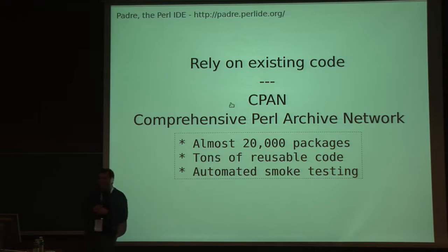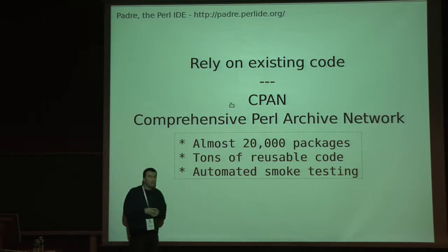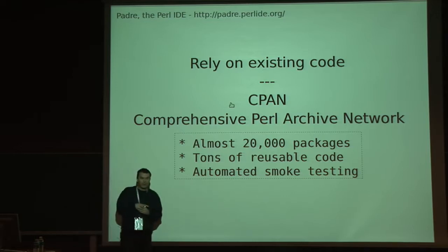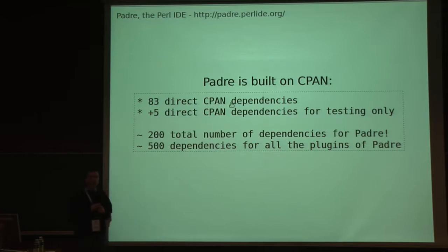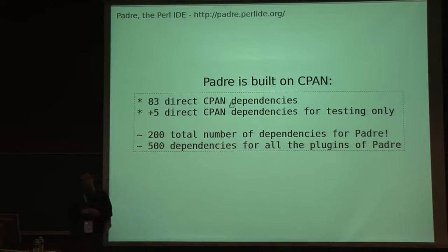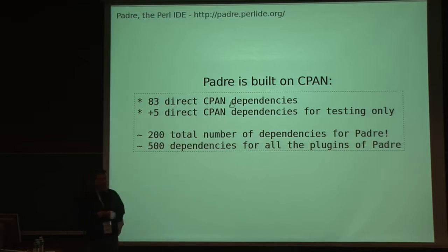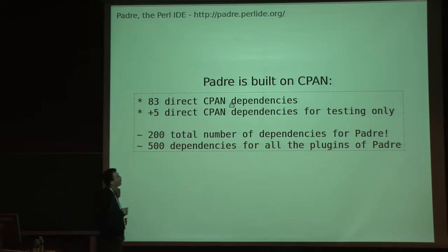Another thing I've been doing is relying on existing code. For Perl, it's good because we have CPAN — the Comprehensive Perl Archive Network — which has about 20,000 packages for all sorts of things, and they have automatic tests, so a large part is quite high quality. Padre depends on 83 packages within CPAN, and there are five more we use just for testing. These CPAN packages also depend on other things, so in the end we have about 200 dependencies just for Padre. Taking into account all the plugins, we easily reach 500 dependencies — which is really good. Code reuse is really good, but it has several faces: the good is we don't have to write that code, the bad is we don't control it, and the ugly is we have to install it.